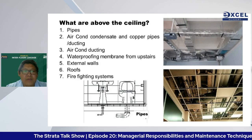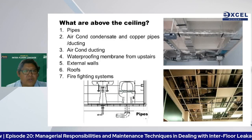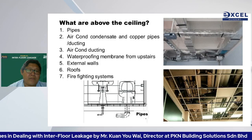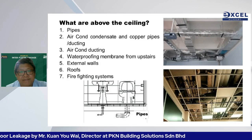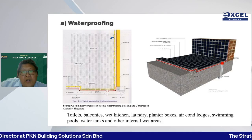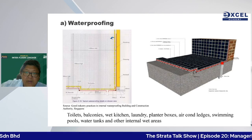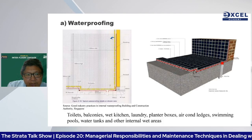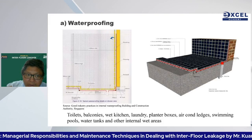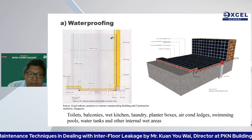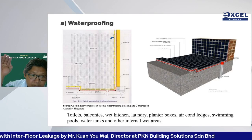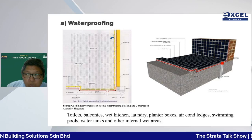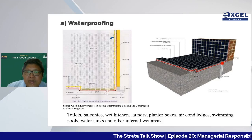Opening a ceiling reveals many possible water sources: pipes, aircon units, waterproofing, external walls, roofs, and firefighting pipes. In 3D, waterproofing must extend into the pipe area. In 2D, it must extend one foot at the door area and up to six feet high at the shower cubicle. For areas not subject to water splashing during showering, a 300 mm upturn on the wall is required.